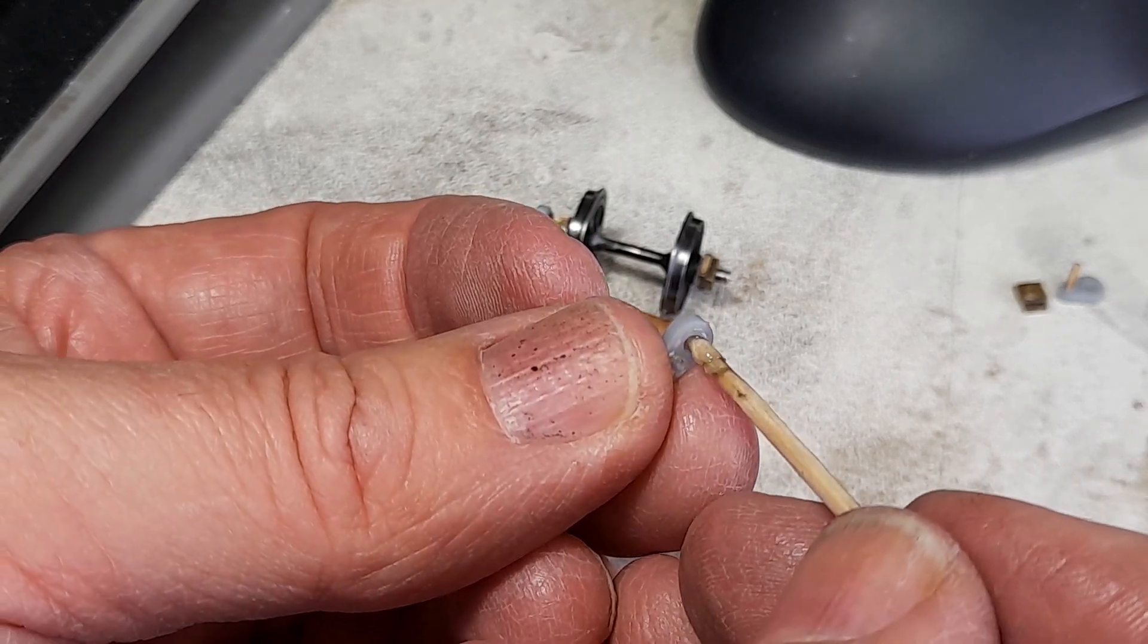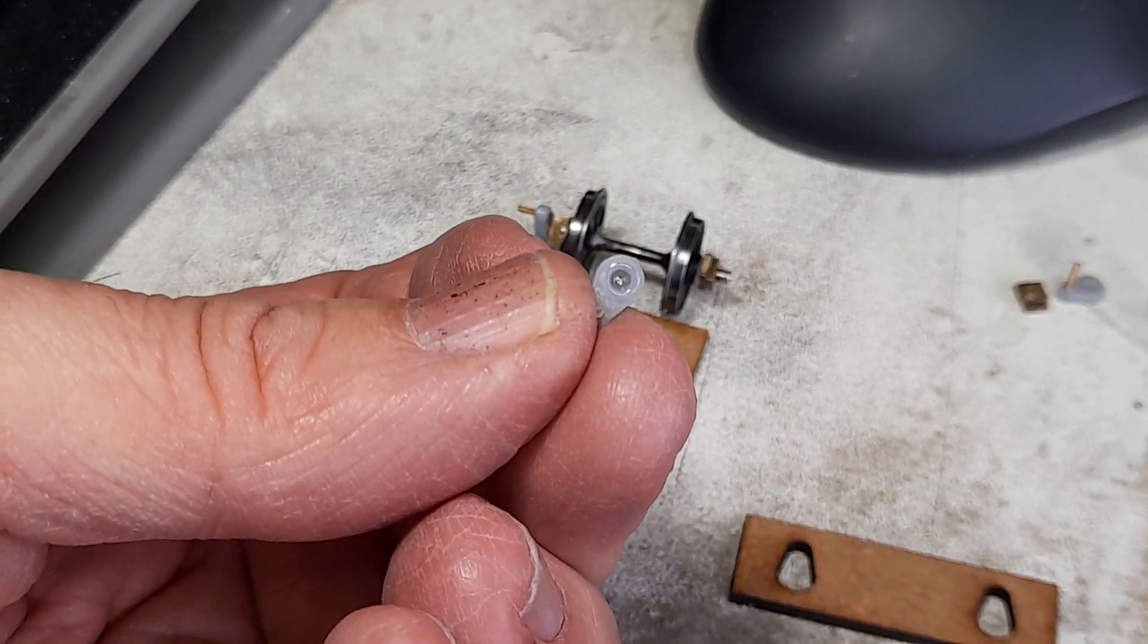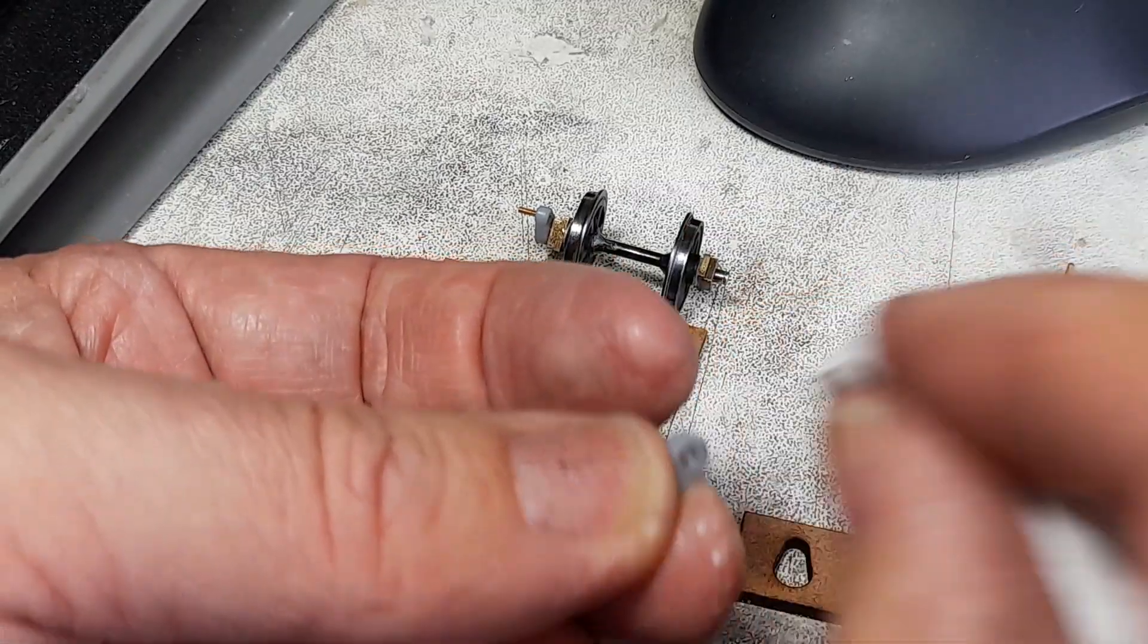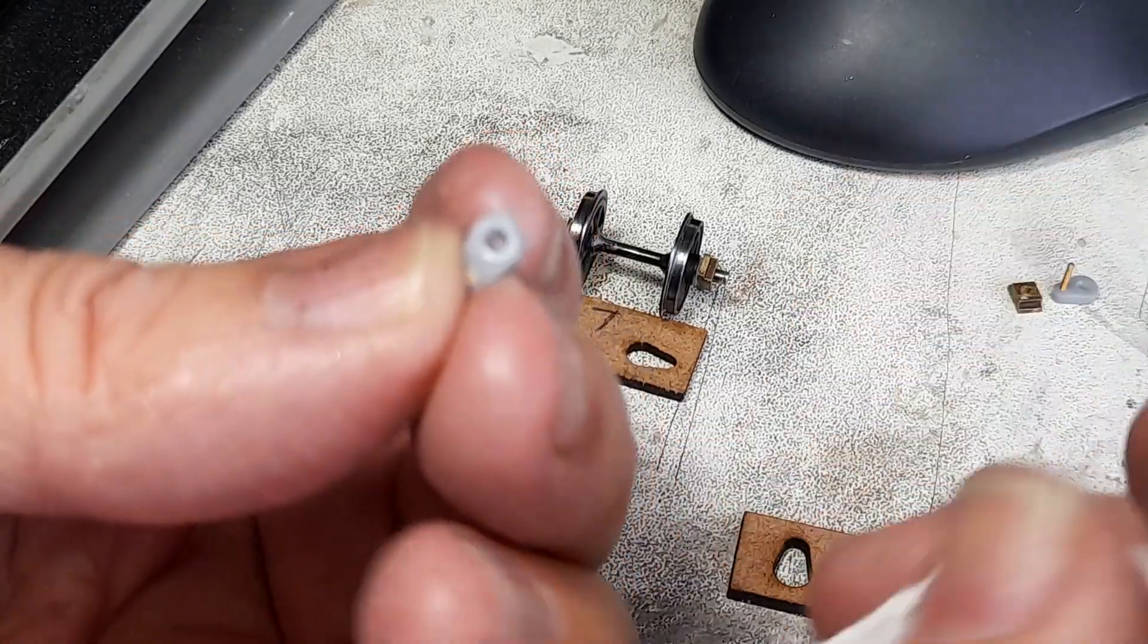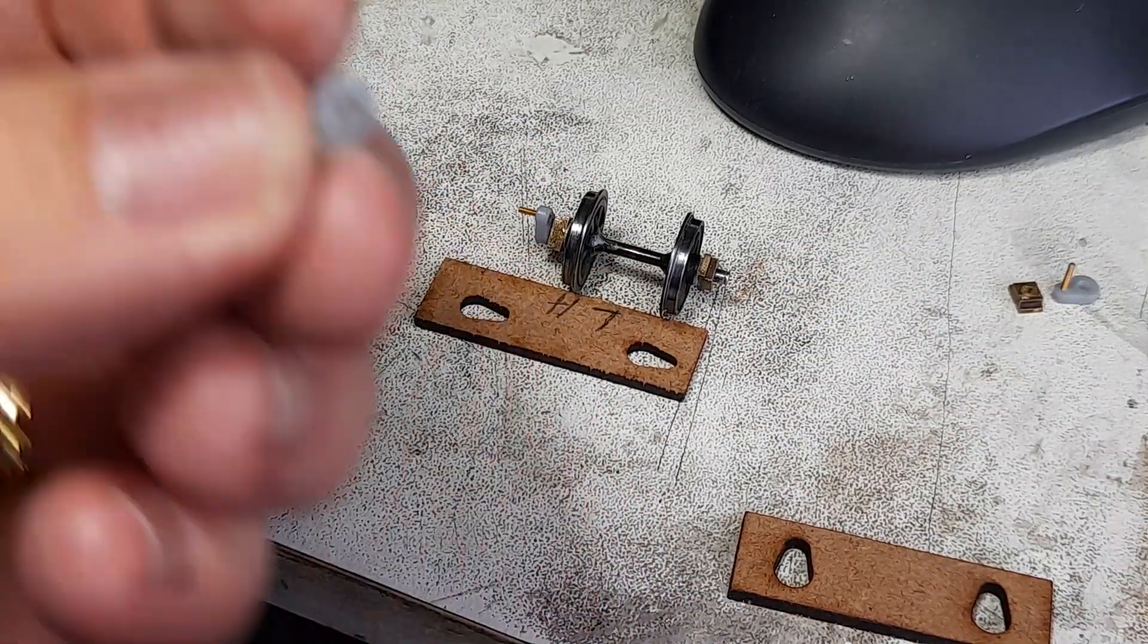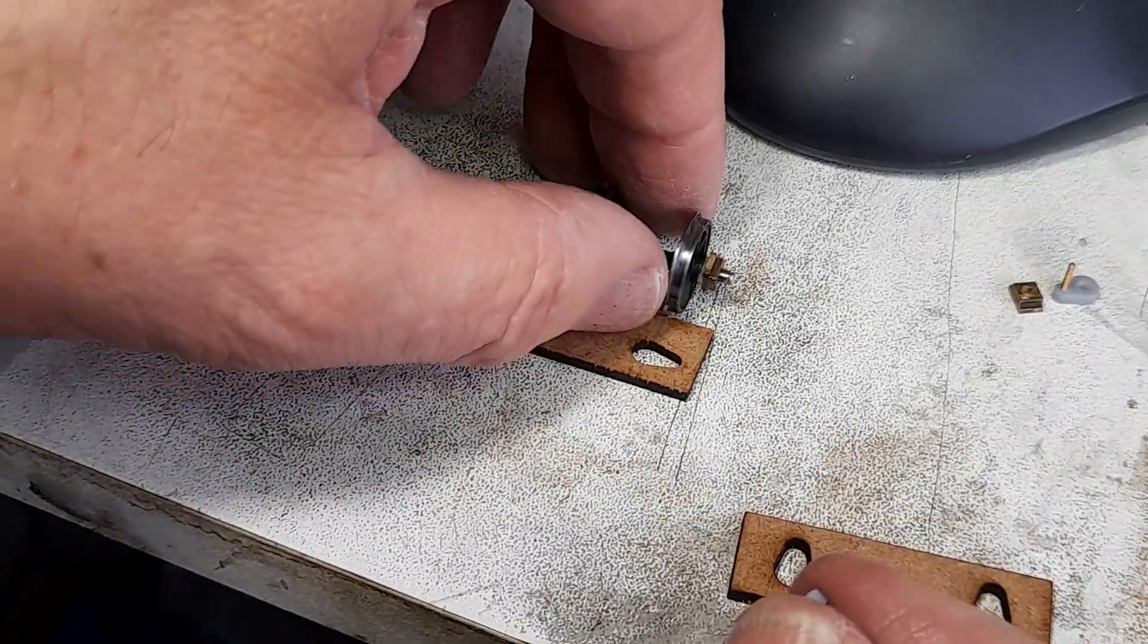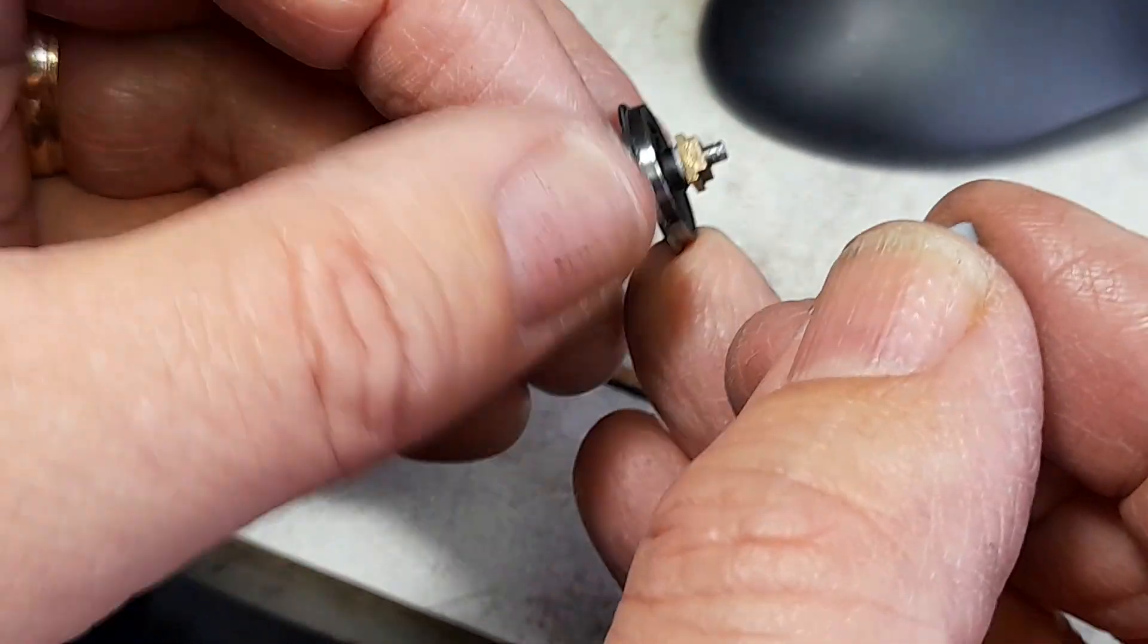Now you'll note I'm putting some epoxy resin—this is Devcon—I'm putting the resin into the crank, not onto the axle, because if you put it onto the axle it'll push straight into the bearing. If it pushes anywhere, I want it to push out, not into the bearing to cause problems.